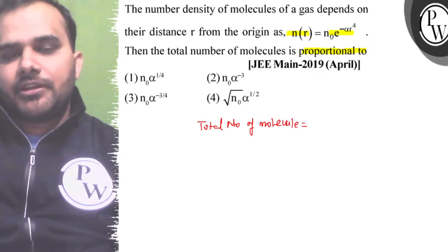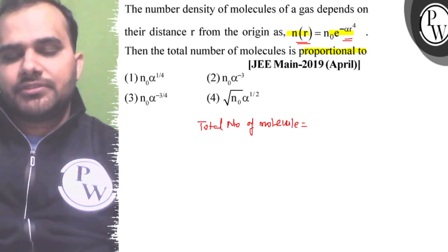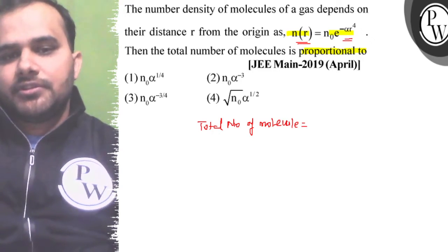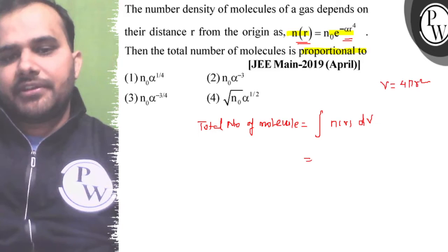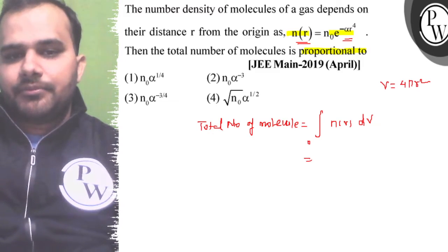Basically we have to integrate it because n_r is a function of r, so this is the variable. First of all, we will see the formula. We can write it as n(r) into dV, right? We already know that this is 4πr², and the limit we have to use is from 0 to infinity.